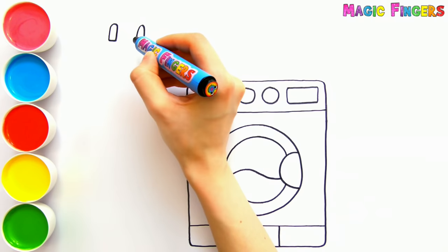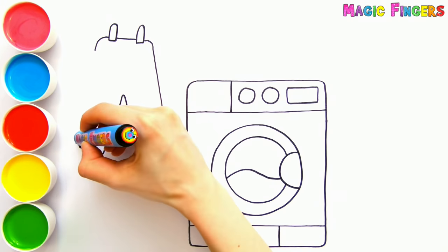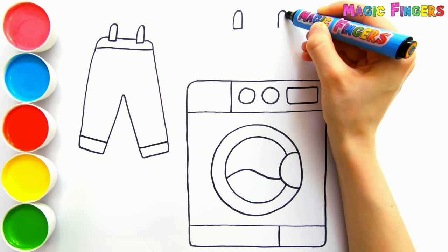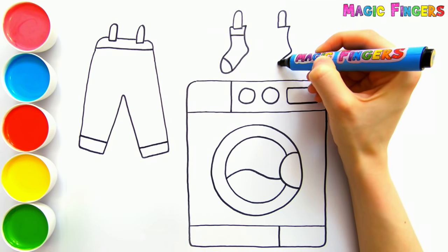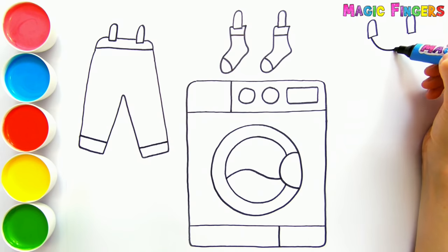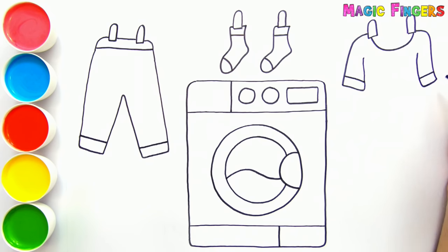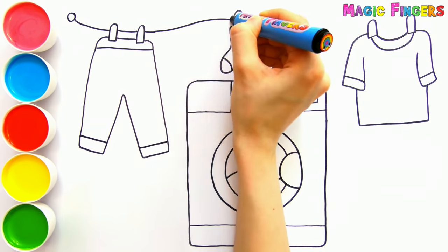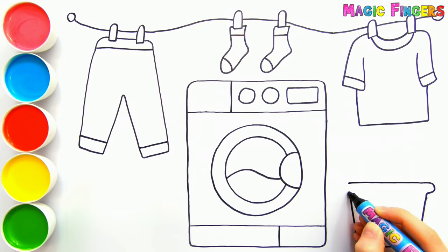Now I'm drawing trousers. And socks. Let's draw a T-shirt here. These clothes are drying now. There is a laundry basket over here.